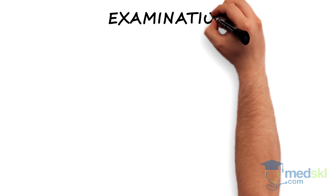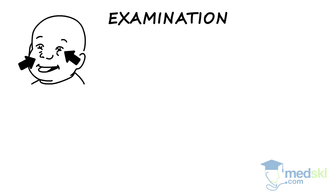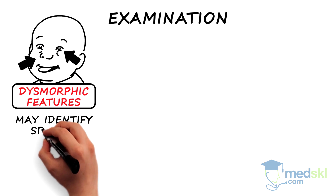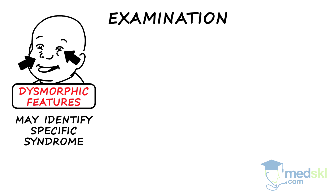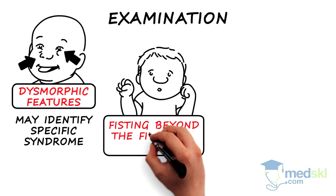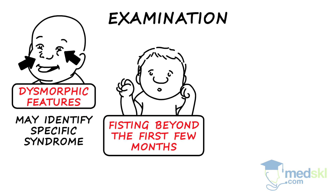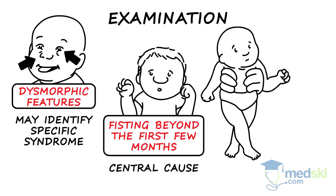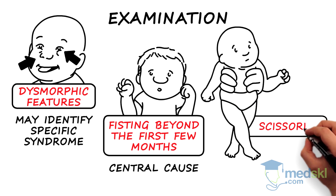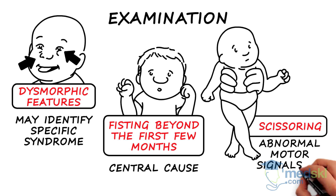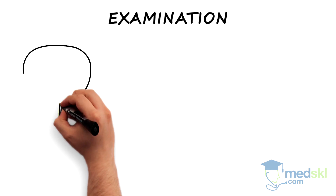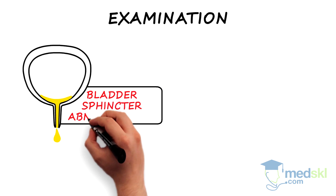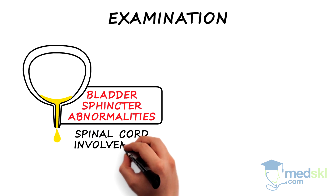On examination, the presence of dysmorphic features may identify a specific syndrome. Fisting beyond the first few months of life is abnormal and associated with central causes of hypotonia. In vertical suspension, scissoring indicates abnormal motor signals to the legs. A sensory level with bladder sphincter abnormalities points to spinal cord involvement.